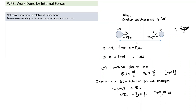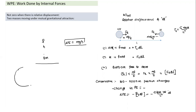One more point about potential energy: when we say ΔPE = mgh for lifting a mass near Earth's surface, this is a two-object system — Earth and the mass. The potential energy changes because of the internal gravitational force between them when their relative position changes.